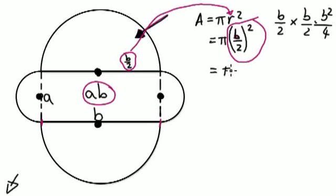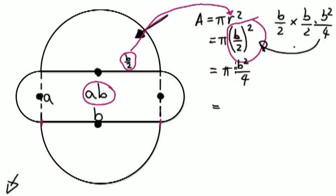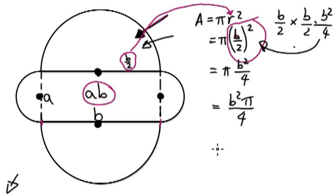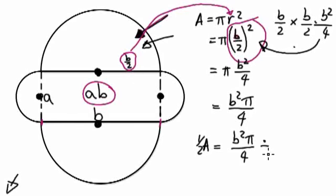So it's really B over 2 times B over 2, so that becomes B squared over 4. So the full circle is pi B squared over 4, because we've just worked out what this is. So now it becomes that, and then it gets multiplied to the top. So it will be B squared pi over 4. This is a whole circle.